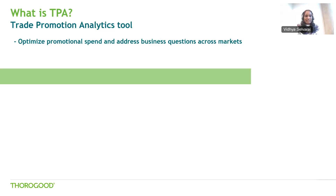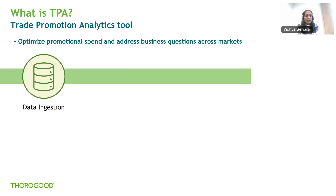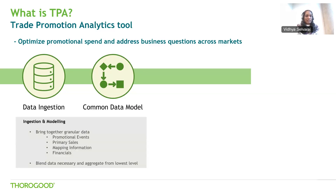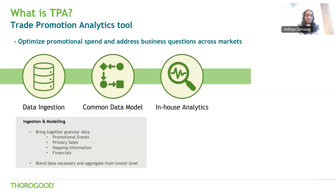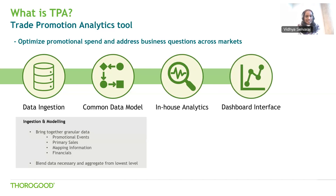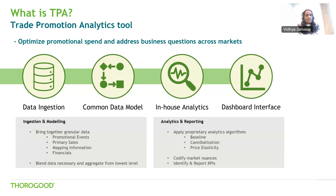Let's take a quick look at the different activities involved in building the tool. There's data ingestion involved and a common data model is built. We bring together granular data from different levels — promotional events, primary sales, mapping information, and financials data. We then blend the data at the right levels and aggregate it to give insights at the right aggregation. We have in-house analytics algorithms, some of them proprietary, built for analyzing the data, and finally it is reported using a dashboard interface. The analytics algorithms include baseline, cannibalization, and price elasticity. We also codify market nuances in these algorithms, and finally identify and report the required KPIs.